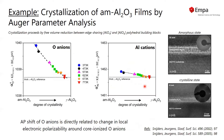Here you see some results of this analysis, where we plot on the left side the oxygen Auger parameter as a function of the degree of crystallinity. You can see that the crystallization process of these oxide films is associated with very pronounced changes,